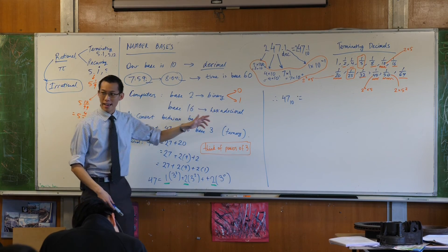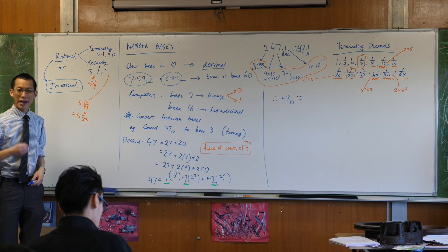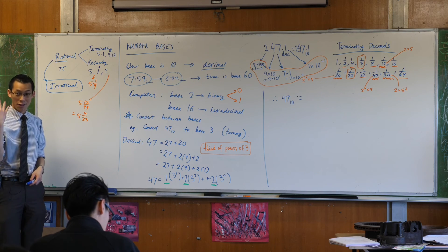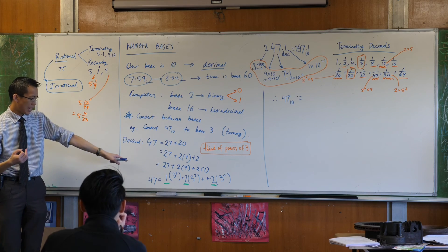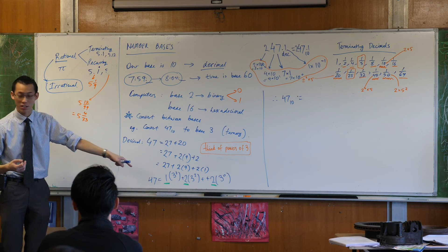How many digits do we have to choose from in base 3? 3. What are the digits? 0, 1, and 2. And that's why you only get 0's and 1's and 2's.